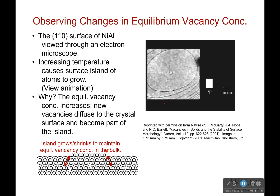Each of those little surfaces changed. The little island of atoms grew and then disappeared as we kept on increasing and decreasing the temperature. What's happening is the equilibrium vacancy concentration increases, and new vacancies begin to diffuse into the crystal. All those atoms that moved out of the way move upward and become part of that little island.